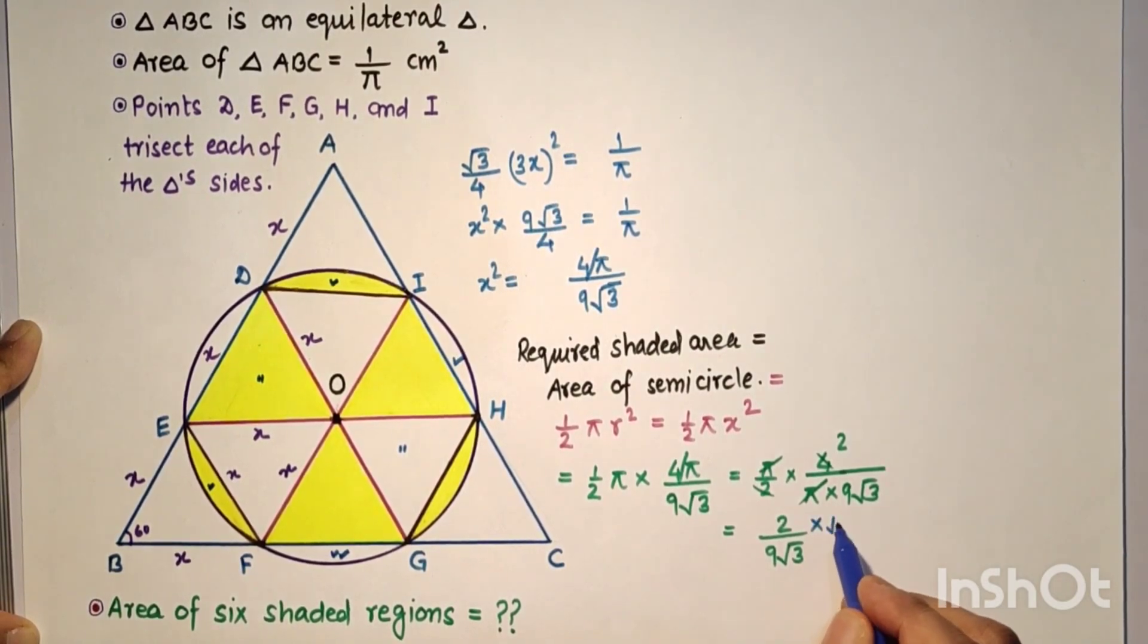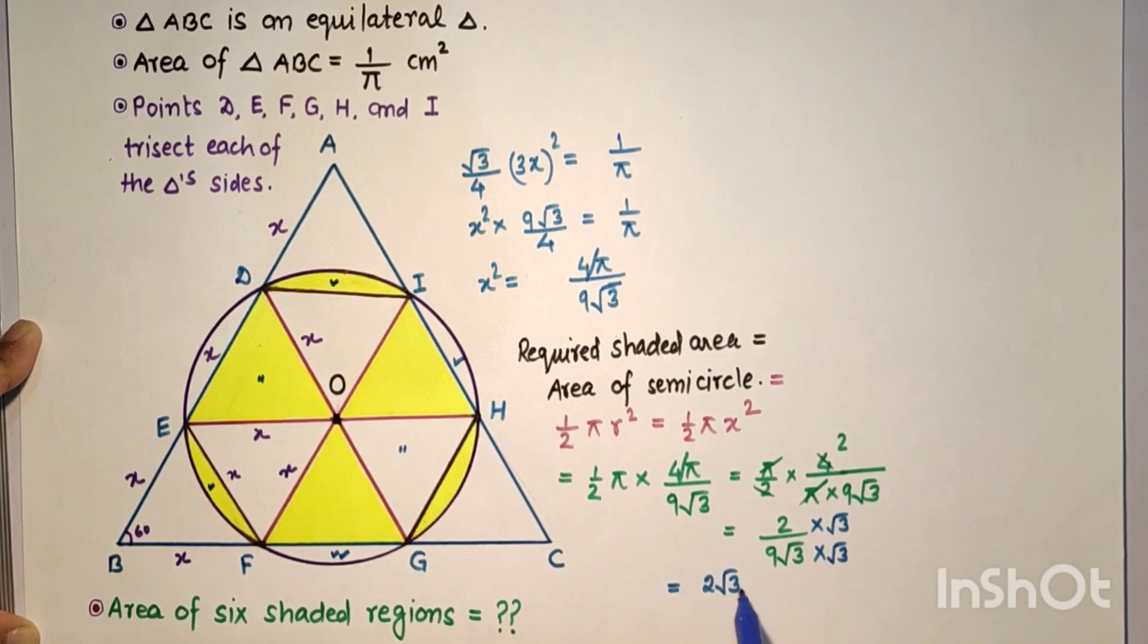If you want to rationalize the denominator, multiply by √3/√3. The final answer will be 2√3/27 cm², and that is the answer.